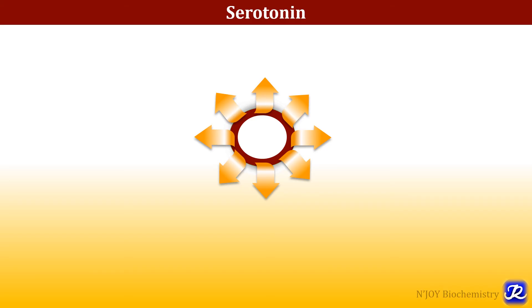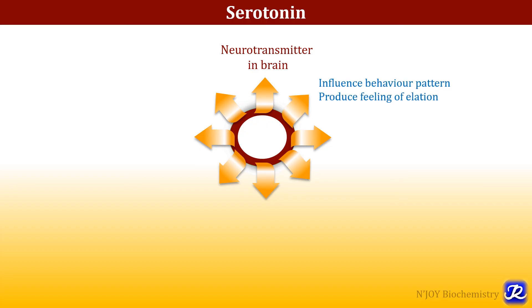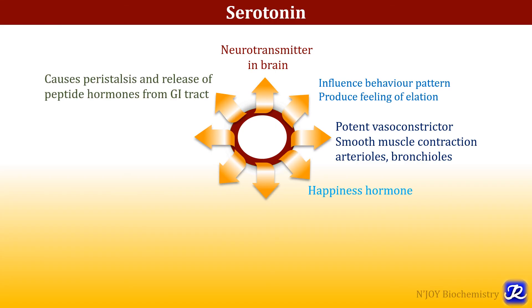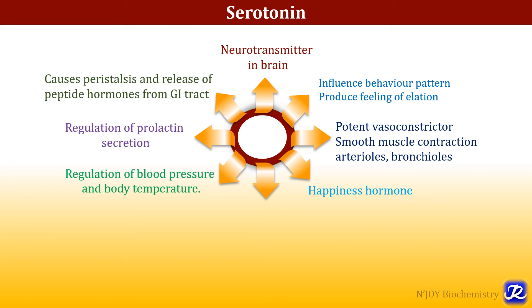What are the various functions of serotonin? Serotonin is an important neurotransmitter in the brain. It influences behavior patterns and produces a feeling of elation. It is a potent vasoconstrictor and causes smooth muscle contraction of arterioles and bronchioles. It is also called the happiness hormone. It causes peristalsis and release of peptide hormones from the GI tract, regulates prolactin secretion, regulates blood pressure and body temperature, and serotonin is a sleep inducer.